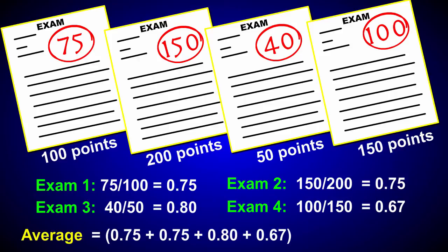Next, add the percentages together and then divide by the number of exams. Your final grade for this chemistry course is 0.74, or 74%.